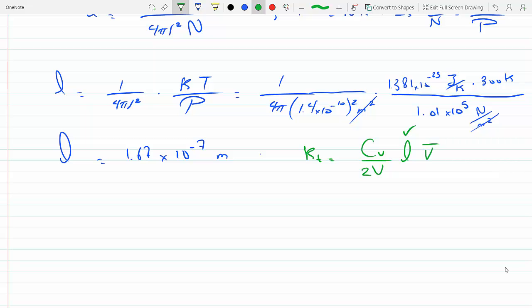So let's go ahead and find that. V_RMS is equal to the square root of 3KT over M.